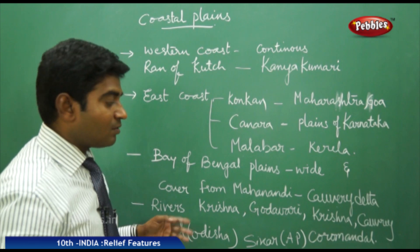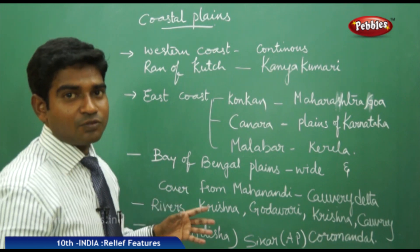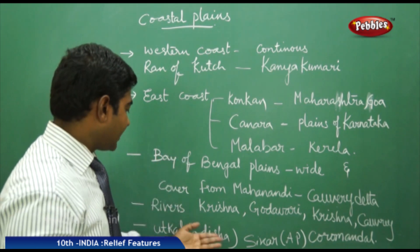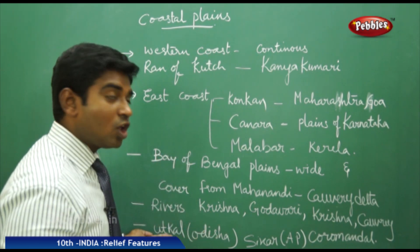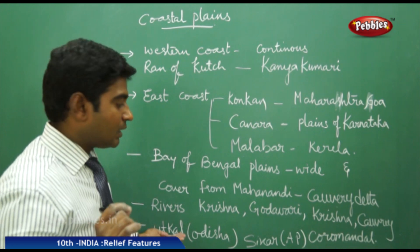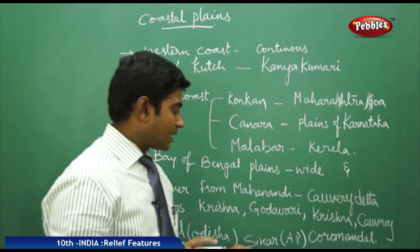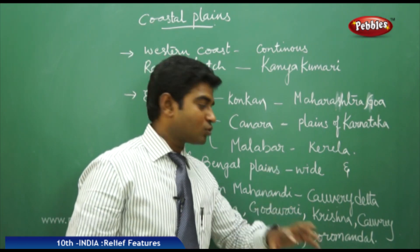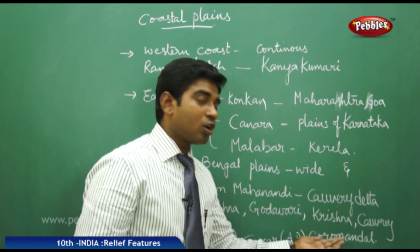These eastern coastal plains have different names in different regions: in Odisha it is called Utkal, in Andhra it is called Sarkar, and in Tamil Nadu it is called Coromandel.